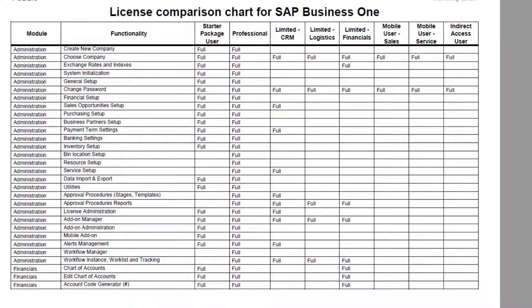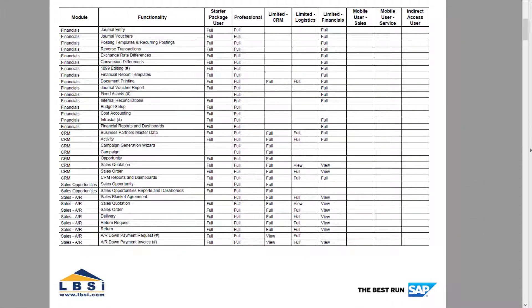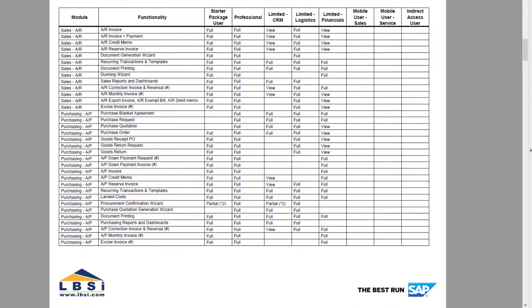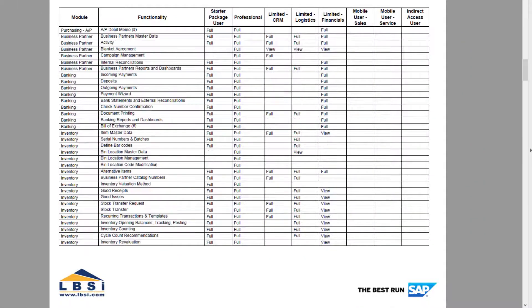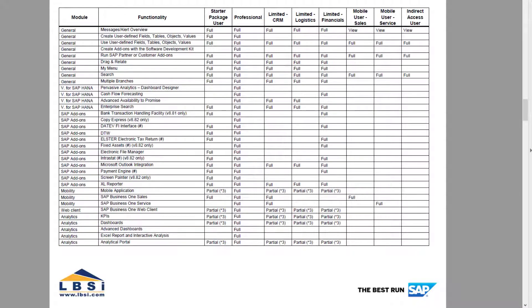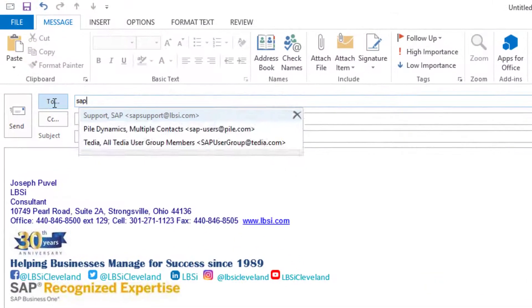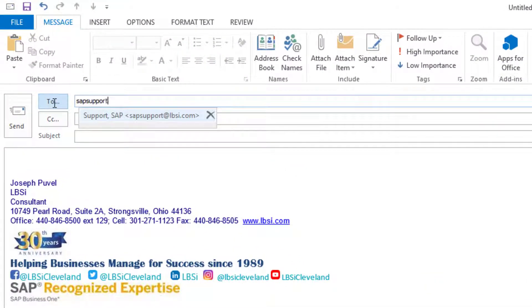If you are an existing client, you can find this license comparison chart on the B1 Share in your file explorer under the LBSI SAP Business One documentation folder. If you cannot find the chart or you are not an existing client, send an email to us at sapsupport@lbsi.com and we can provide it to you.